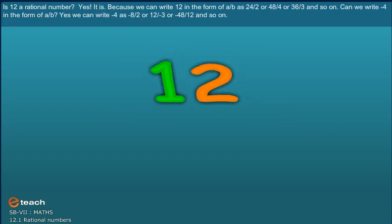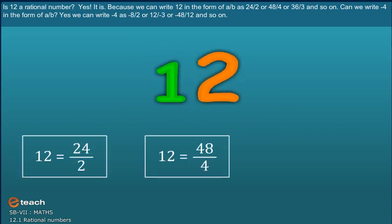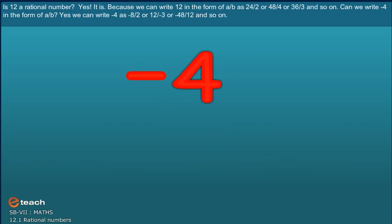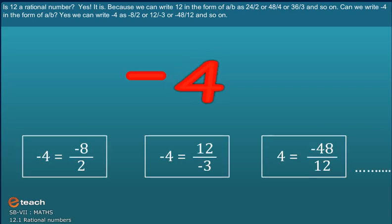Is 12 a rational number? Yes, it is. Because we can write 12 in the form of a by b as 24 by 2 or 48 by 4 or 36 by 3 and so on. Can we write minus 4 in the form of a by b? Yes, we can write 4 as minus 8 by 2 or 12 by minus 3 or minus 48 by 12 and so on.